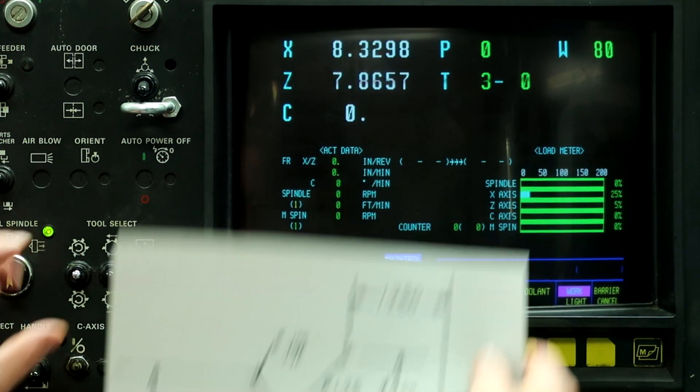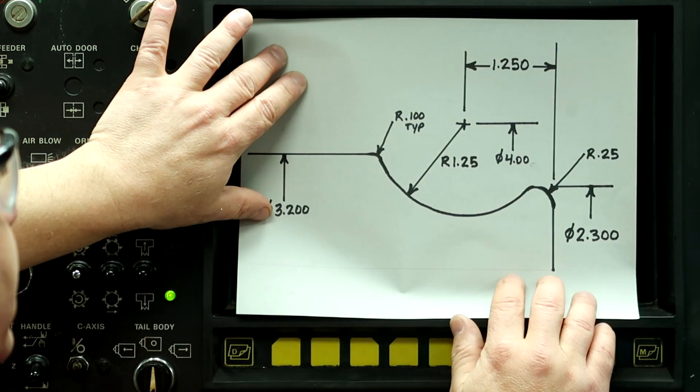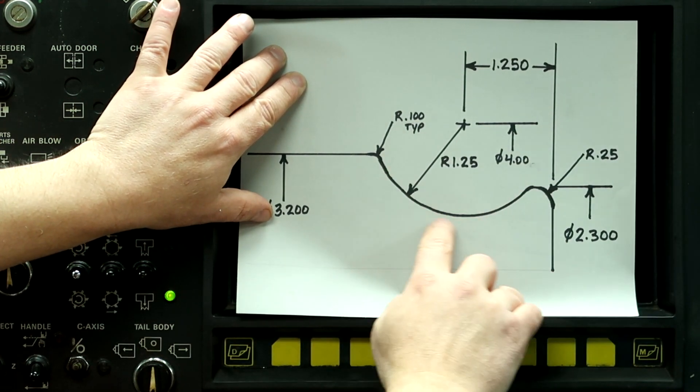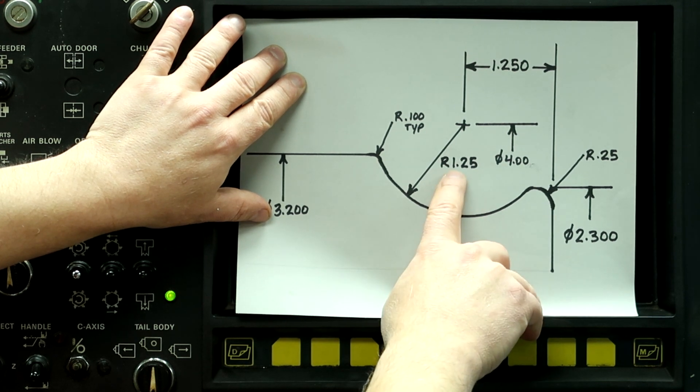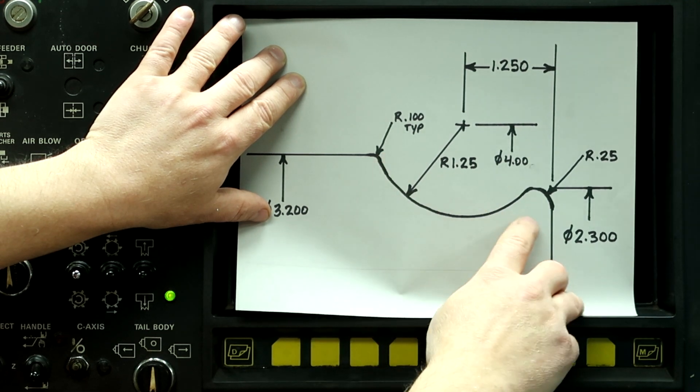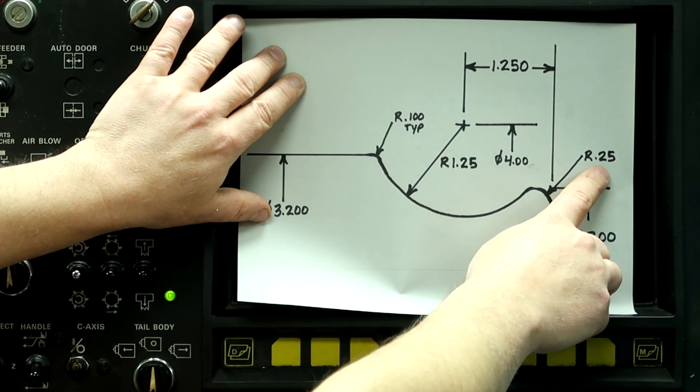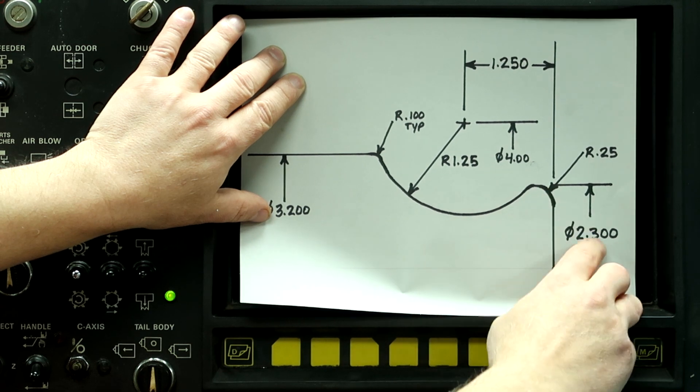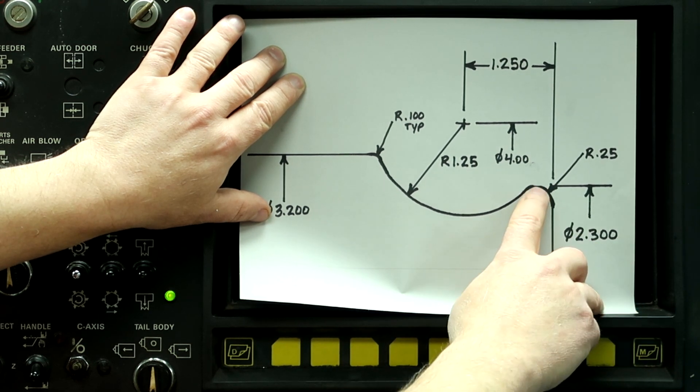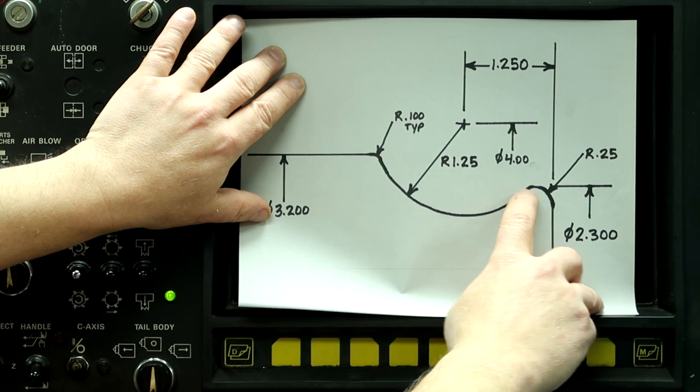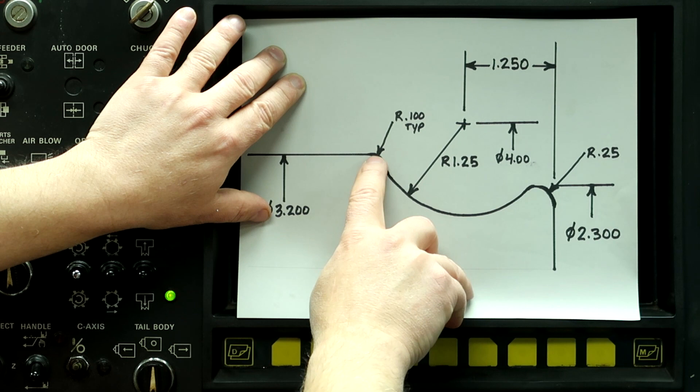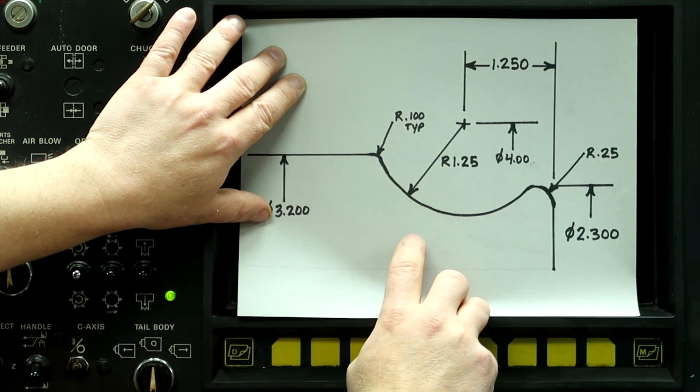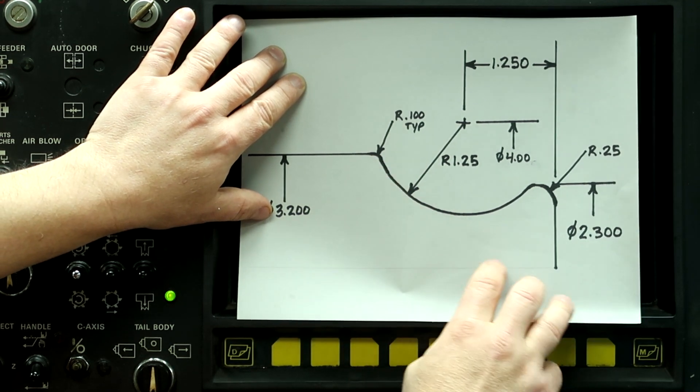Alright guys, here's our next work piece. So this is the concave radius that we're going to be machining next. It's a 1.25 inch radius on the outside of the part, and then it has a 2.50 radius on the front of it, a small diameter at 2.3 inches. And then it's got a hundred thousandths typical radii at each end of the large radius. So let's get started programming it now.